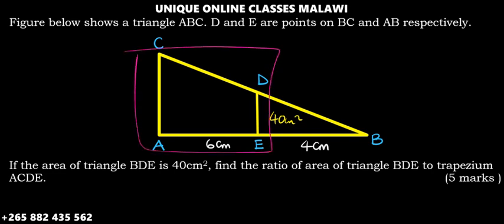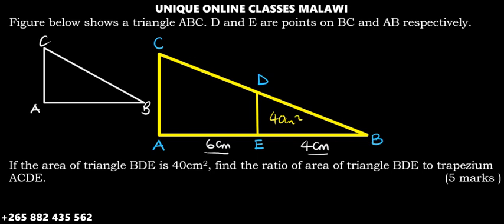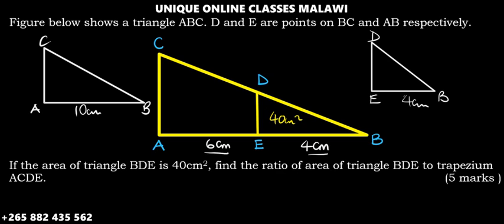We need to find a scale factor for this. Let's draw the bigger triangle — we have D, B, and C. Since EB is 6 centimeters and the total AB is 10 centimeters, the small triangle BDE has DB equal to 4 centimeters.